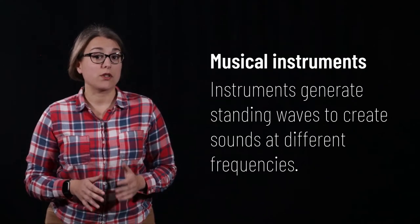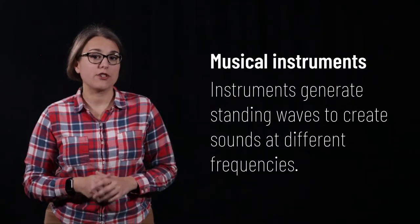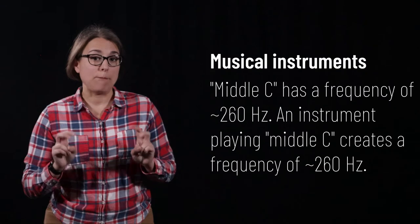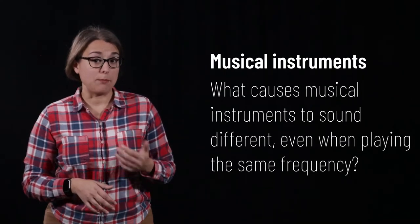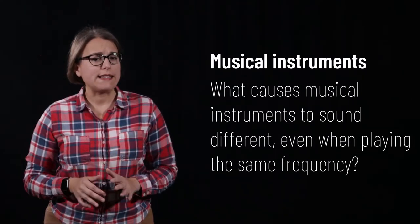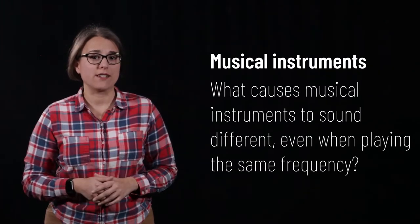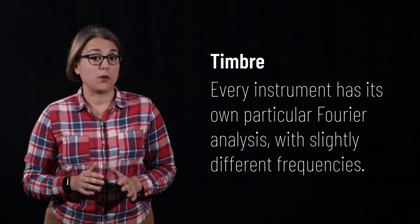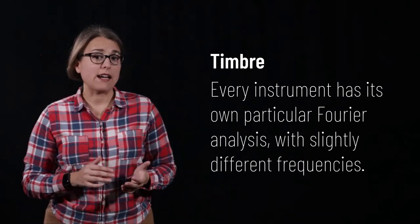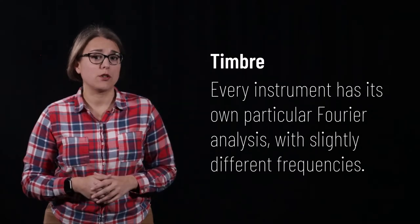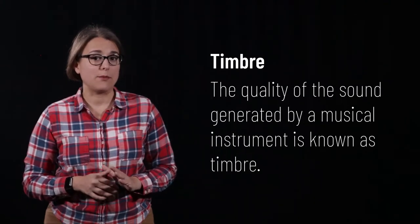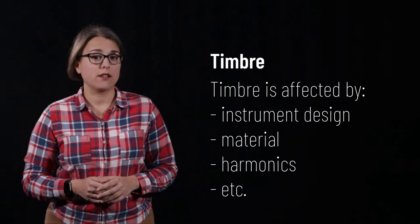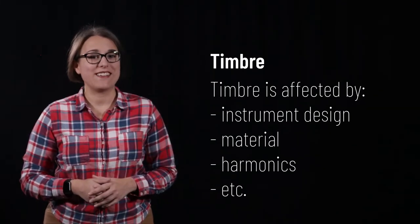Musical instruments are designed to support different standing waves and create sounds at different frequencies. For example, the note middle C has a frequency of about 260 Hz. If five different instruments all play middle C at the same frequency, what causes each instrument to sound different? In fact, each instrument will have a slightly different Fourier analysis — the exact frequencies that make up any particular musical note will differ from instrument to instrument. This characteristic is called timbre, and it has to do with the design of the instrument, the materials it is made from, and how many harmonics are created.